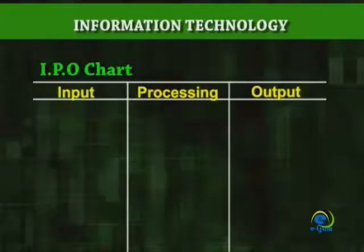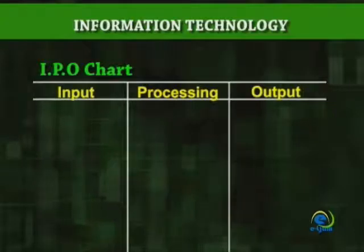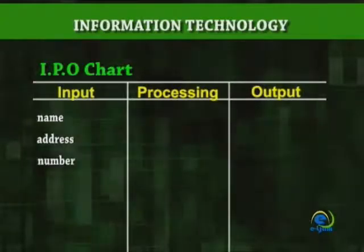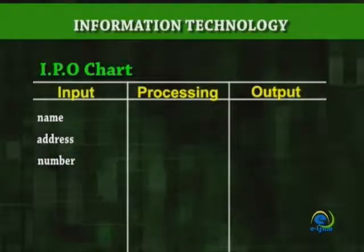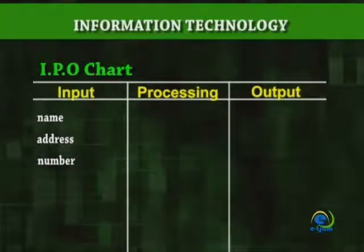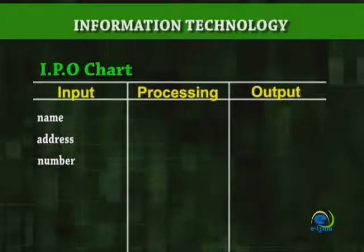Inputs are usually descriptive nouns which simply provide a list of the program's inputs. Examples: name, address, number. We normally get input from the keyboard or from files. The processing required is usually indicated by verbs, indicating the actions to be performed. Examples: read, calculate, print.